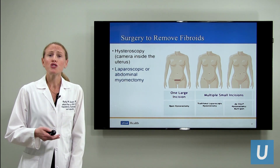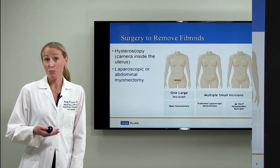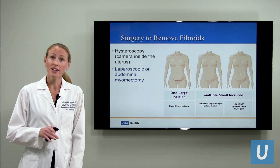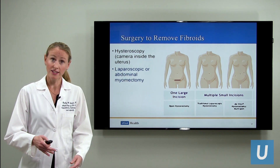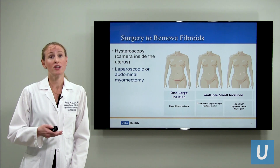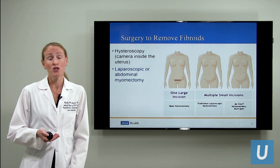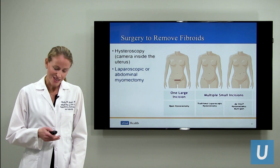The approach to removing fibroids from an abdominal standpoint really depends upon the fibroid size, number, location, and also your surgeon's preference. Importantly, if there's an incision made from the outside on the wall of the uterus, a recommendation of a delay of three months is usually made prior to any attempts at conception.